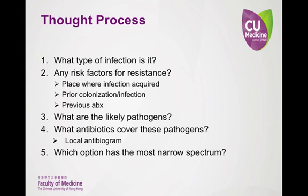After knowing this information, you need to determine what are the likely microorganisms causing the infection, and then what antibiotics cover the pathogens you suspect are the most likely culprits. This information can be obtained from many sources, including international guidelines like the IDSA, local guidelines like the IMPACT guidelines, tertiary literature sources like the Sanford Guide or UpToDate. However, the most accurate source for your situation would be found by reviewing the local hospital antibiogram.